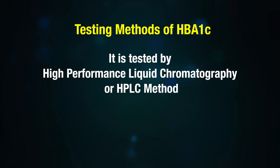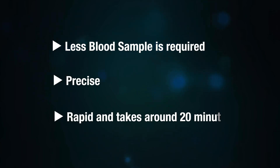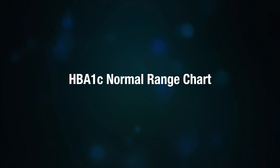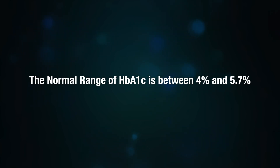The testing method for HbA1c is high performance liquid chromatography, or HPLC. In this method, less blood sample is required. It is precise, rapid, and takes around 20 minutes.